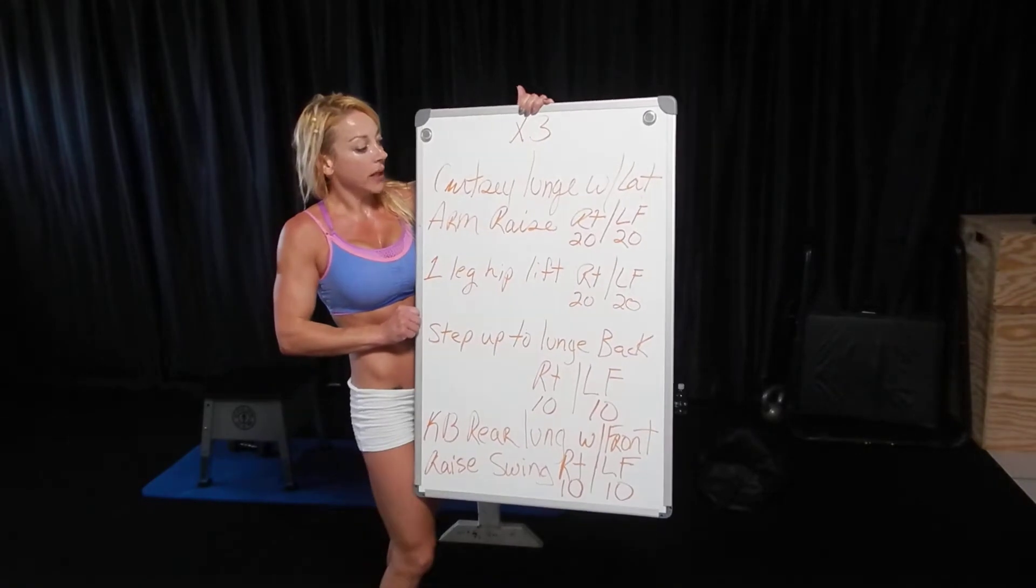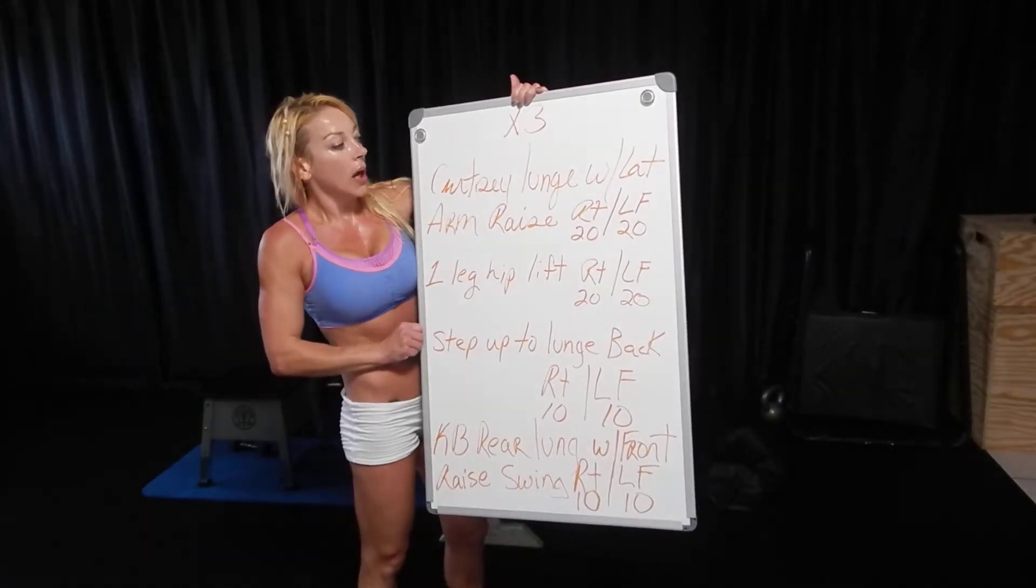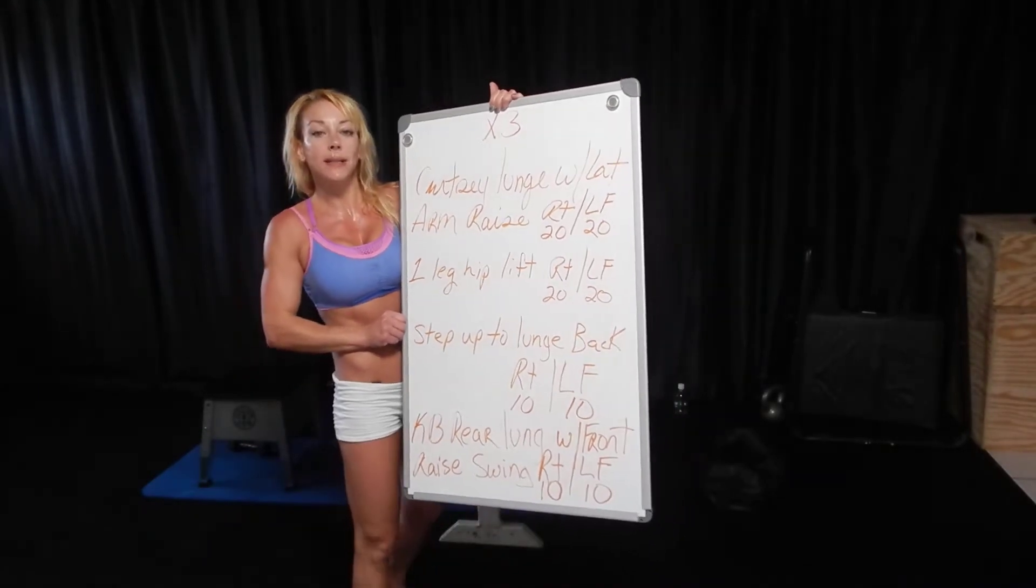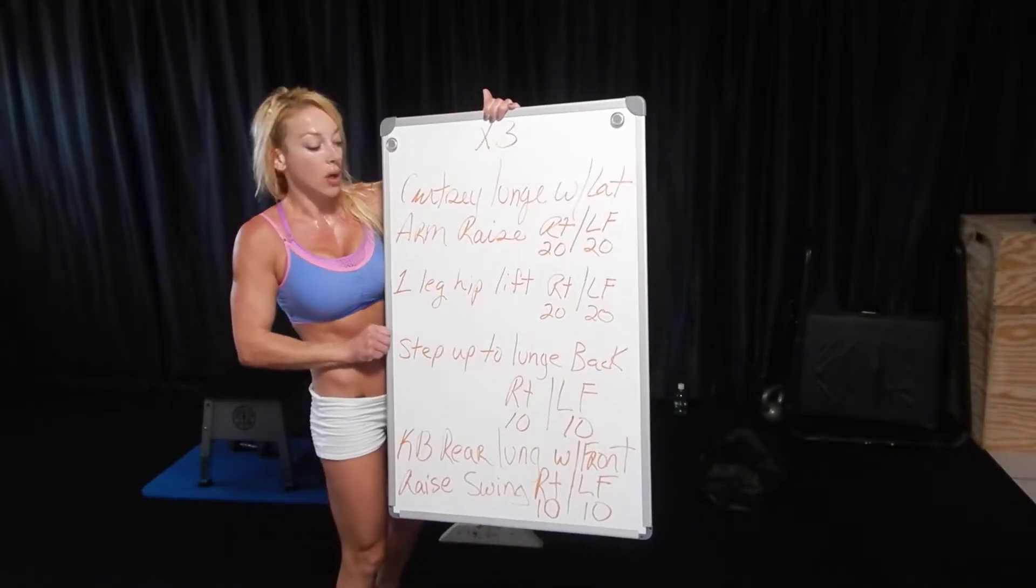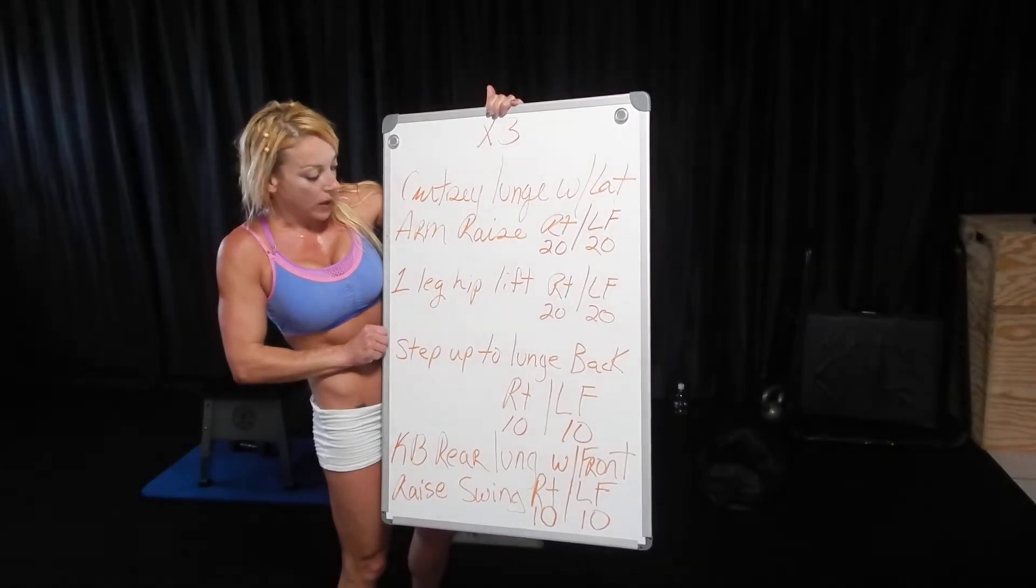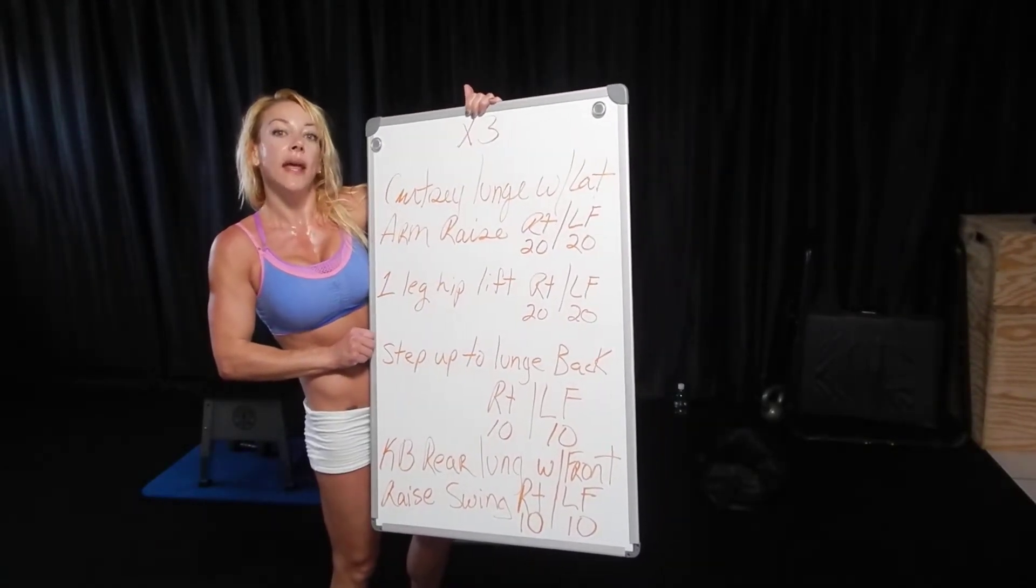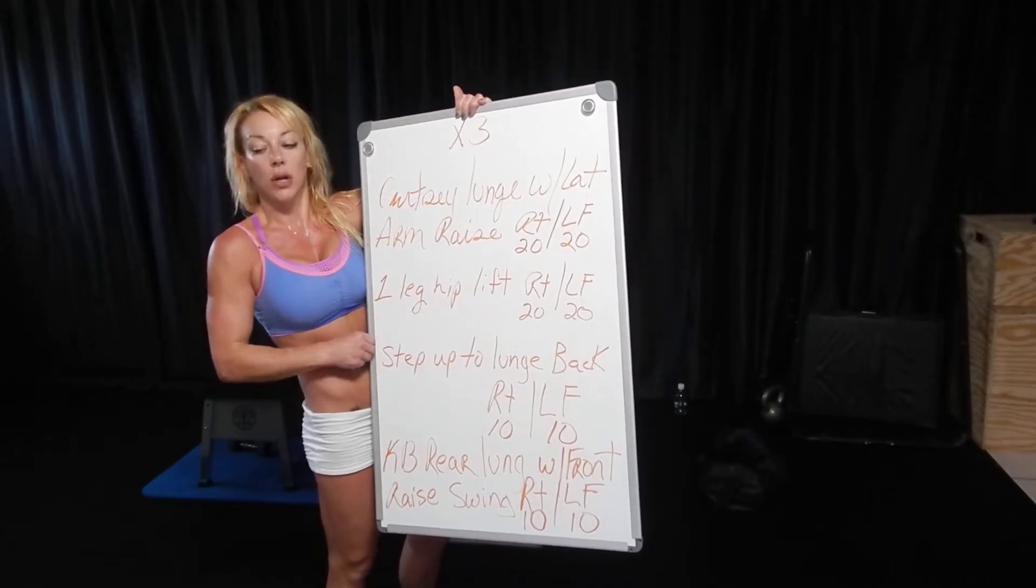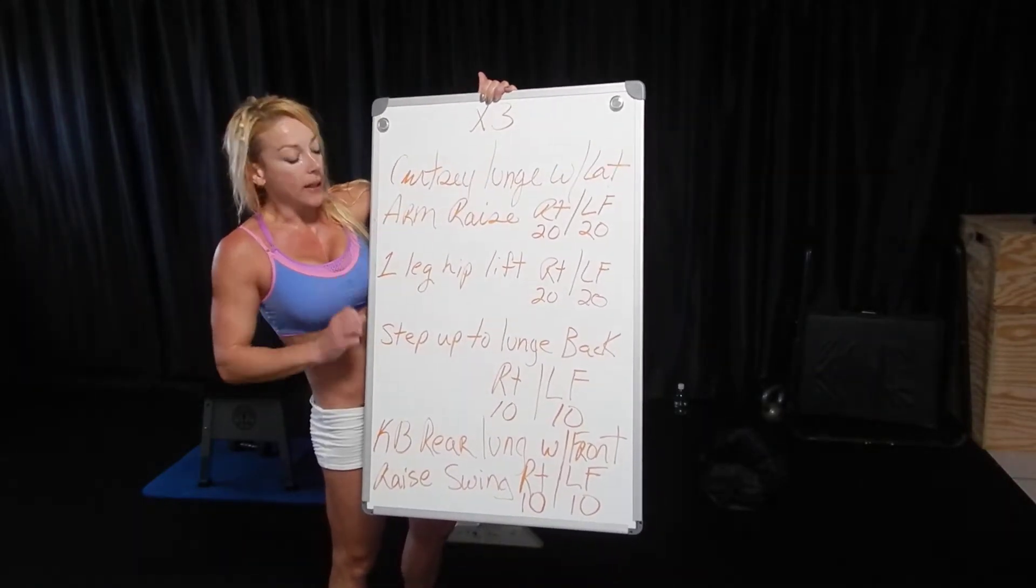This one was just times three rounds, reps. Curtsy lunge with lateral arm raise. I only put five pounds in my hand because there were 20 reps on each side and I wanted to focus on that lunge. And then when it's shoulders, I'll focus on shoulders, so you get your medial glute, your core, and your top delt, but at the lighter weight.